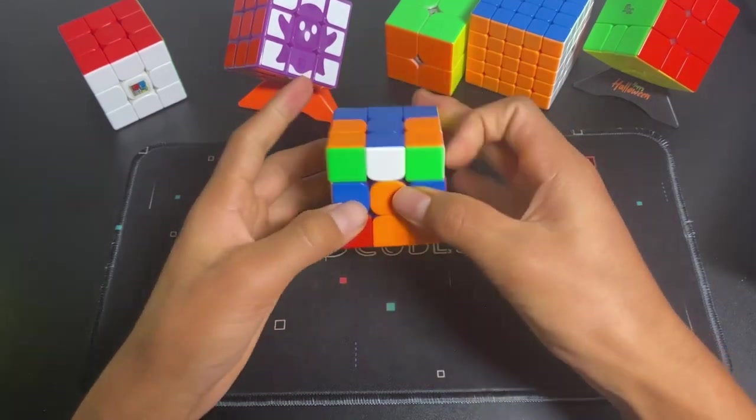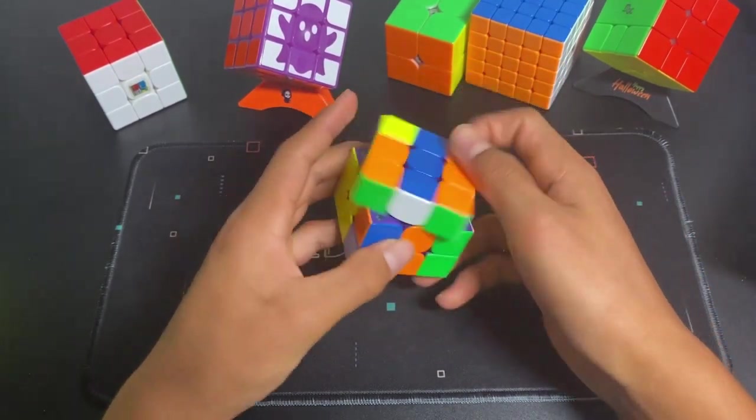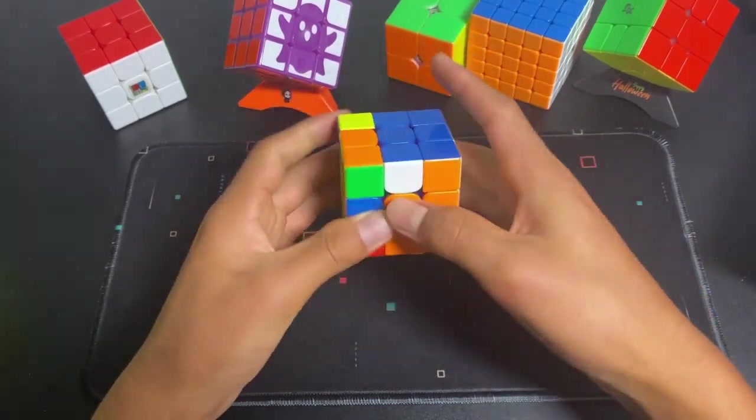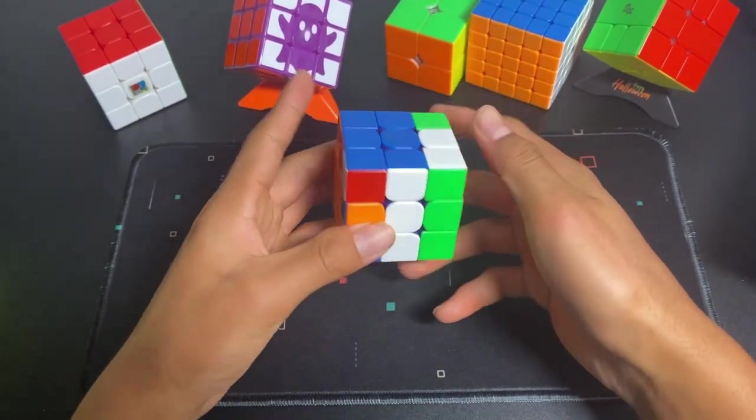So here, if you do that, and your look-ahead is good, because while you solve this, you're looking ahead to the next pair, but that's good.